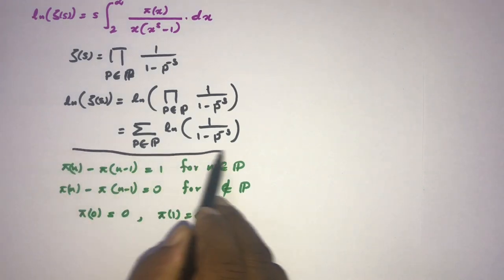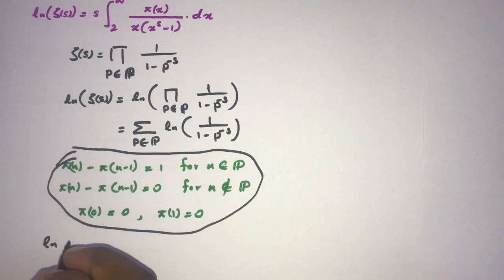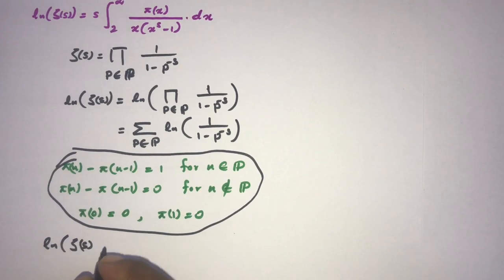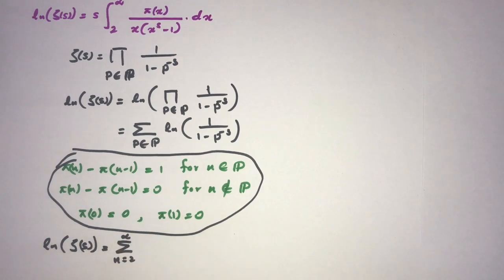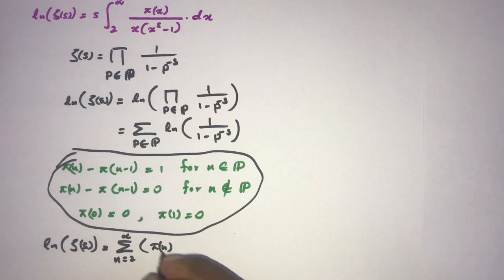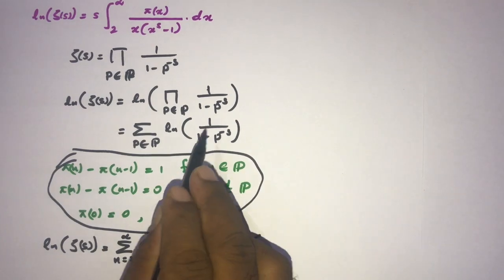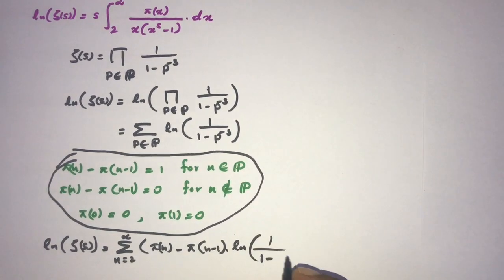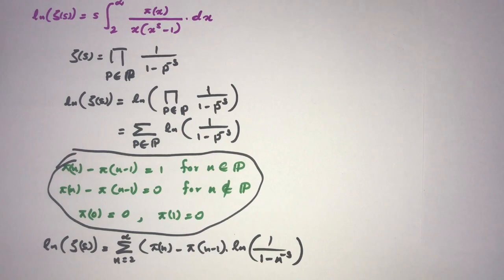Gathering this information, we can write natural log of zeta of s as a sum from n equals 2 to infinity of pi(n) minus pi(n-1), times natural log of 1 over 1 minus n to the minus s. Now we can split this sum into two different sums.